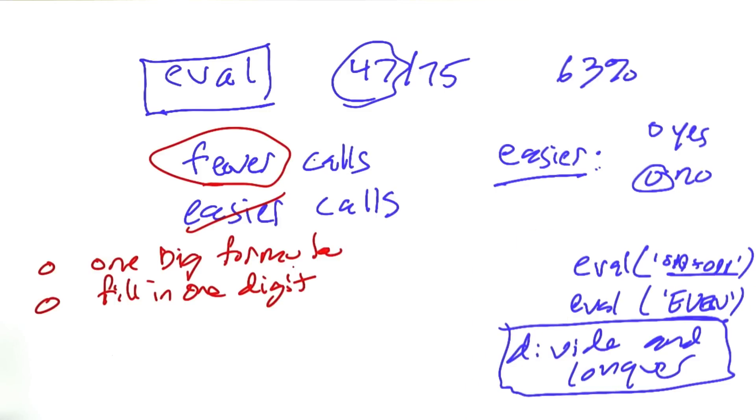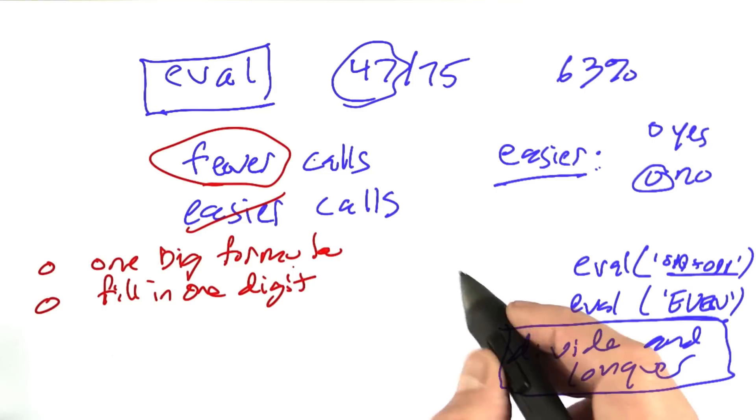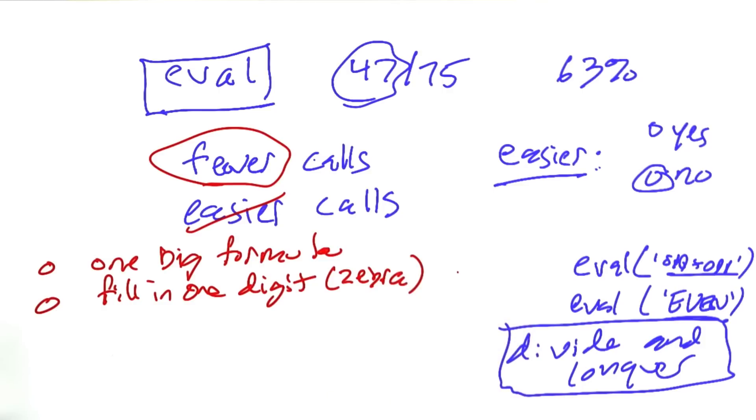That would certainly help us do a smaller number of calls. That's the approach we took with the zebra function, where we started out by doing all the permutations, and then we figured out, let's go through, and if there's a contradiction, let's stop and not do the remaining ones.